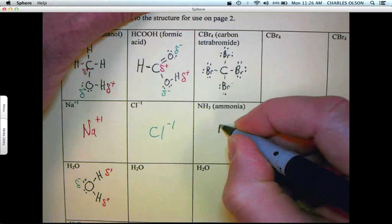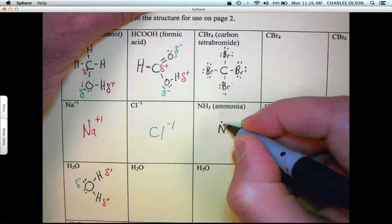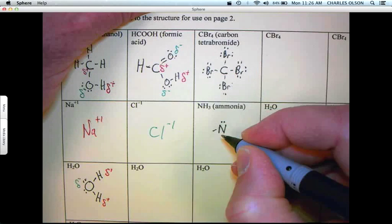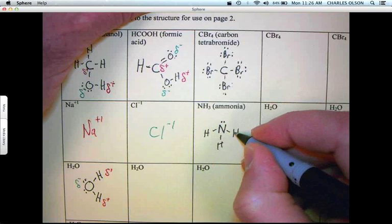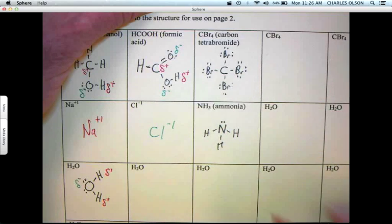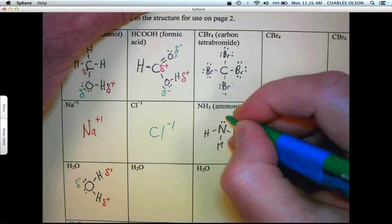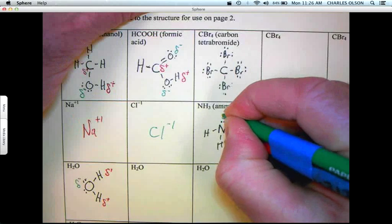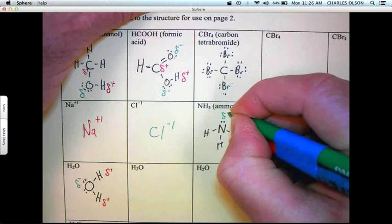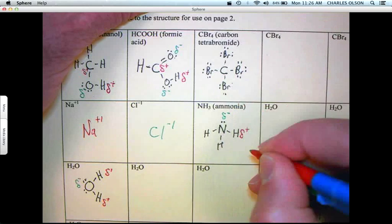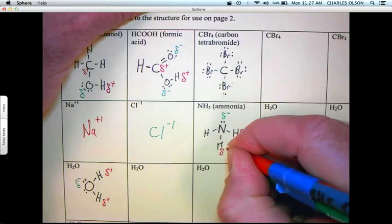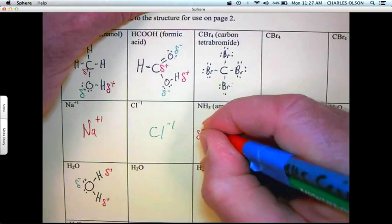Lastly, ammonia: nitrogen bonded to three hydrogens. The NH bond—the nitrogen, like oxygen, relatively electronegative—has the partial minus, whereas the three hydrogens have the partial positives.